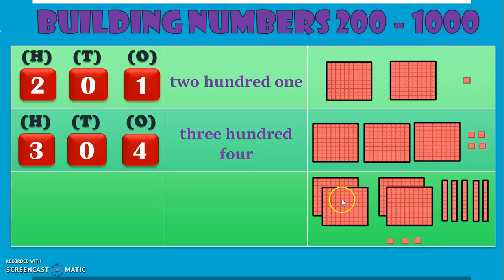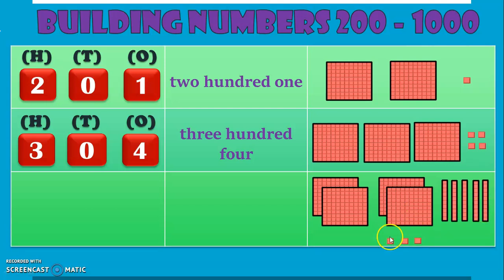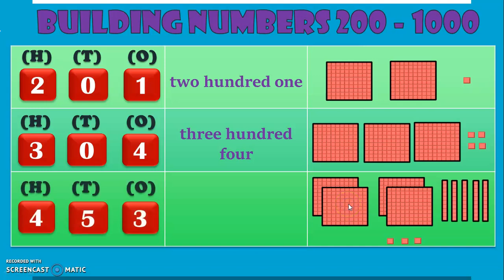Let us see the next number. How many 100s do we have here? 1, 2, 3, 4 — we have 4 hundreds. We have something new here: counting the tens — 1, 2, 3, 4, 5, 6, 7, 8, 9, 10 — so 1 ten, and similarly 2 tens, 3 tens, 4 tens, and 5 tens. So we have 4 hundreds, 5 tens, and 3 ones, making the number 453. We have 4 in the 100s place, 5 in the 10s place, and 3 in the 1s place.